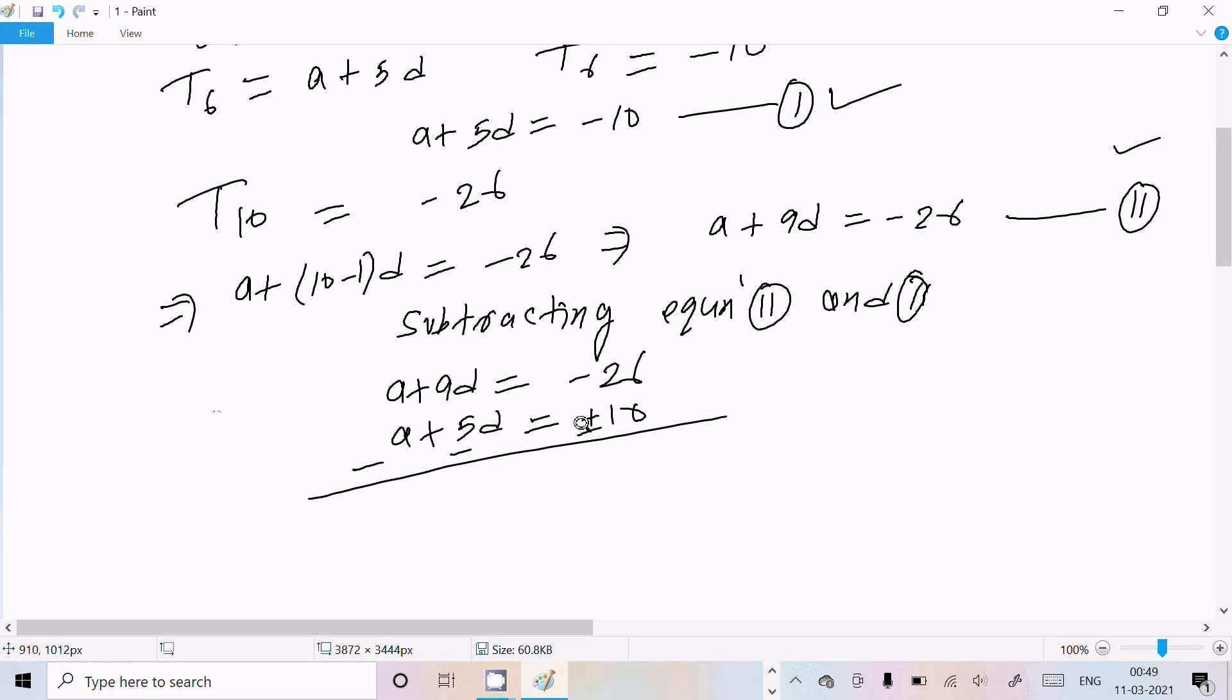Minus minus becomes plus, so this cancels because they're opposite. 9D - 5D becomes 4D, and -26 - (-10) becomes -16. So 4D = -16, so D = -4. The difference that I found out.